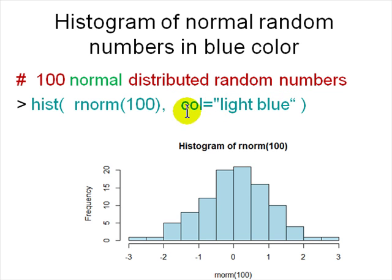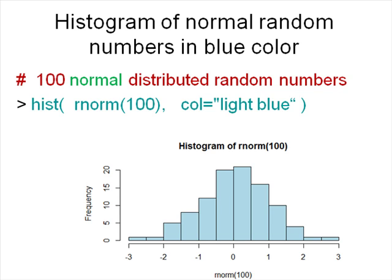Here 'col = "light blue"' is a string you're passing as a named parameter. In R, many functions have lots of parameters. Instead of specifying all of them, you name the ones you care about, and the rest use default values. Default parameters come first, then named ones.